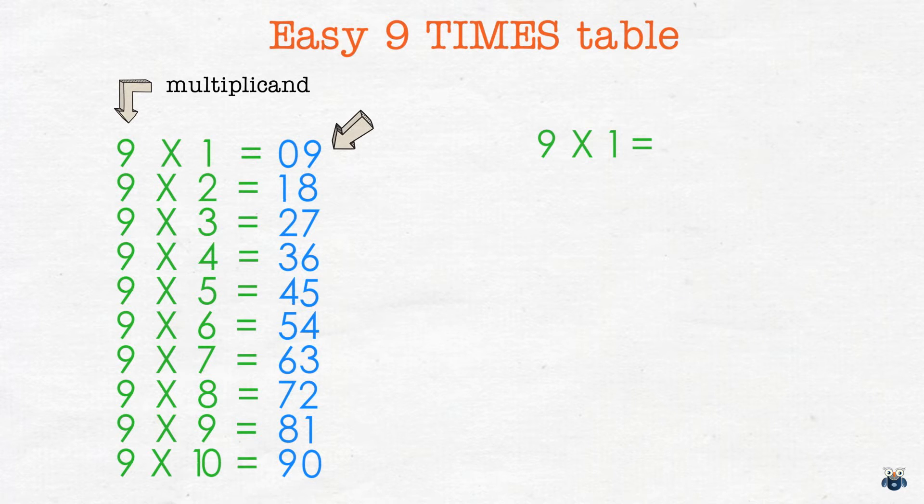Now what if we broke this result which is 09 into two parts, 0 and 9. 0 is 1 less than 1 in the multiplier and 9 is the value of subtracting this result from 9 our multiplicand.